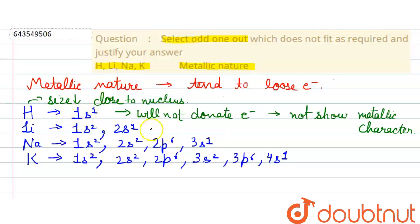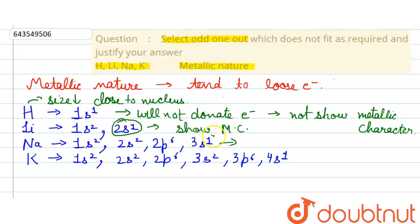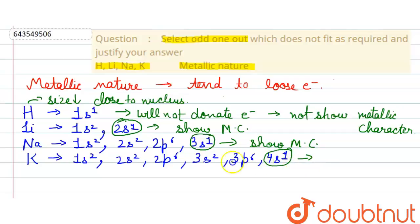Lithium can donate its 2s1 electron to obtain the electronic configuration of the noble gas helium, so it shows metallic character. Similarly, sodium can lose its 3s1 electron to achieve a noble gas configuration, showing metallic nature. Potassium can also donate its 4s1 electron to obtain a noble gas configuration, so it also shows metallic character.